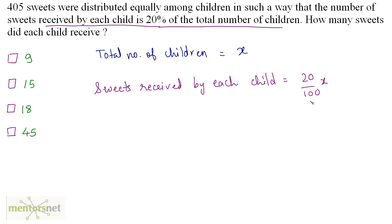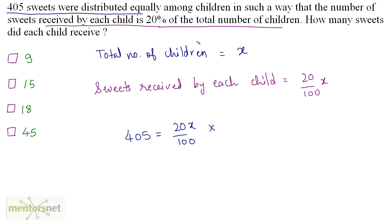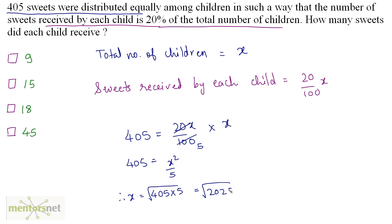One child has 20X/100 sweets. The total sweets distributed equals sweets per child times number of children, so 405 = (20X/100) × X. Simplifying: 20/100 cancels to 1/5, giving 405 = X²/5, so X² = 405 × 5 = 2025, and X = √2025 = 45.